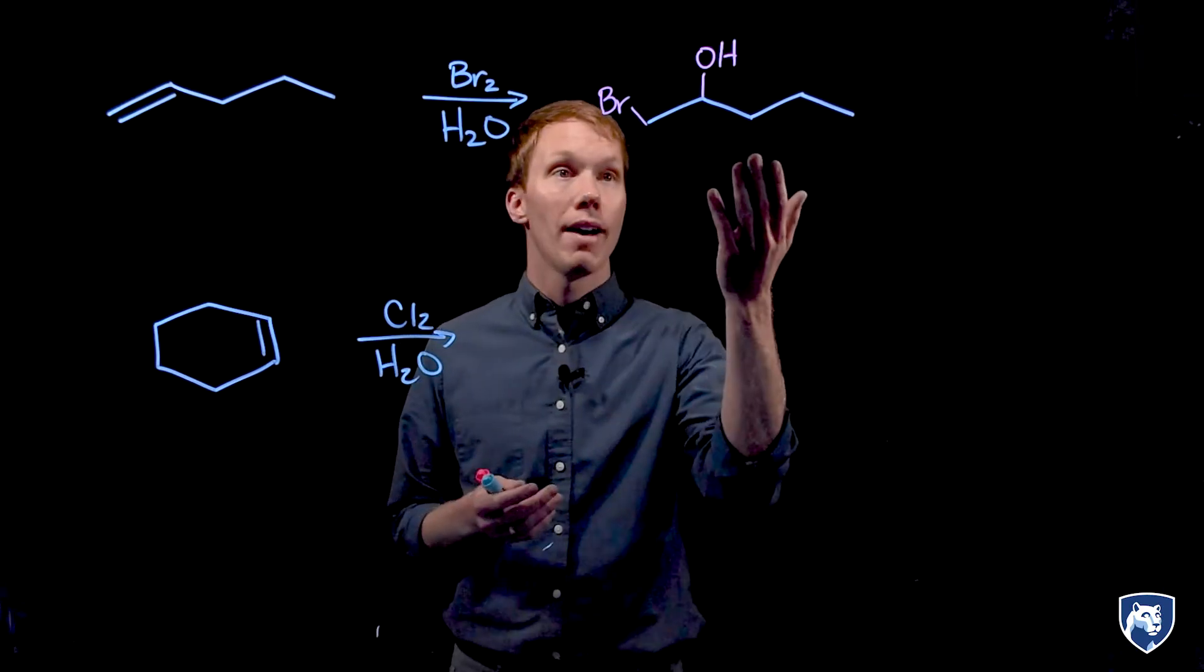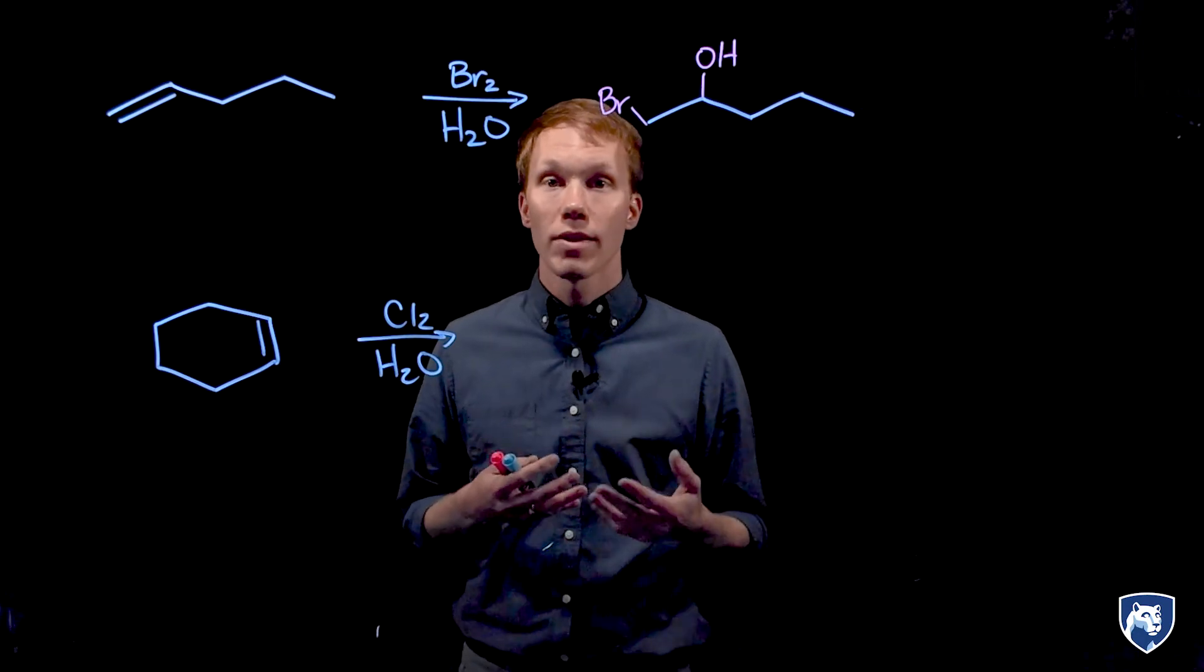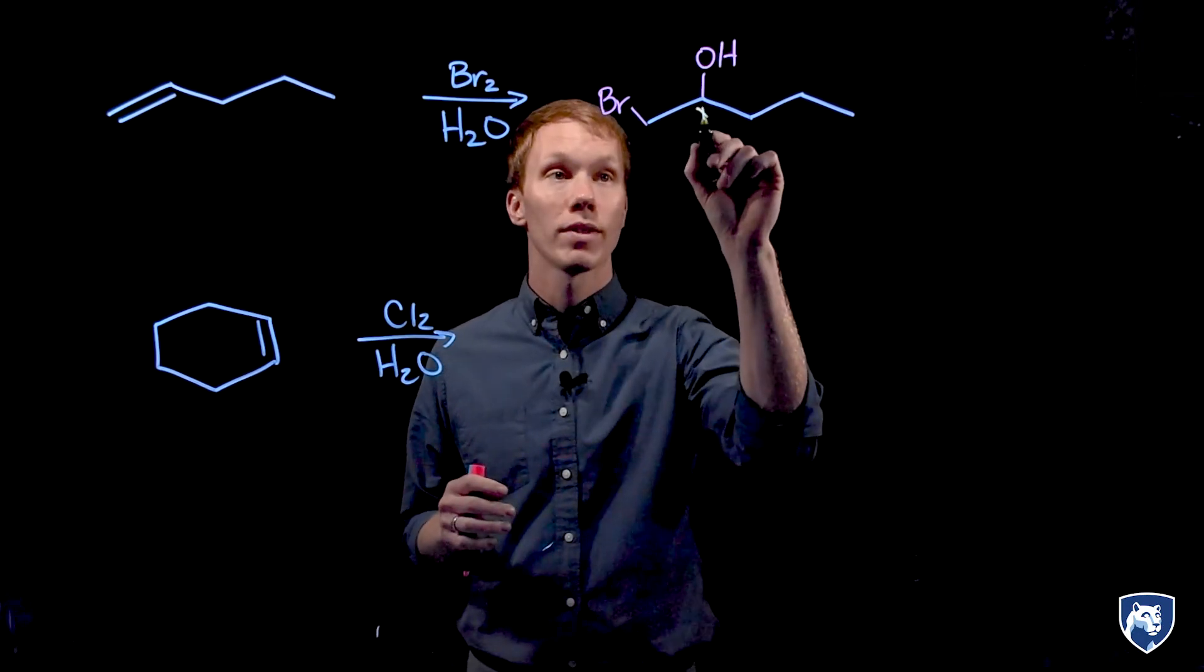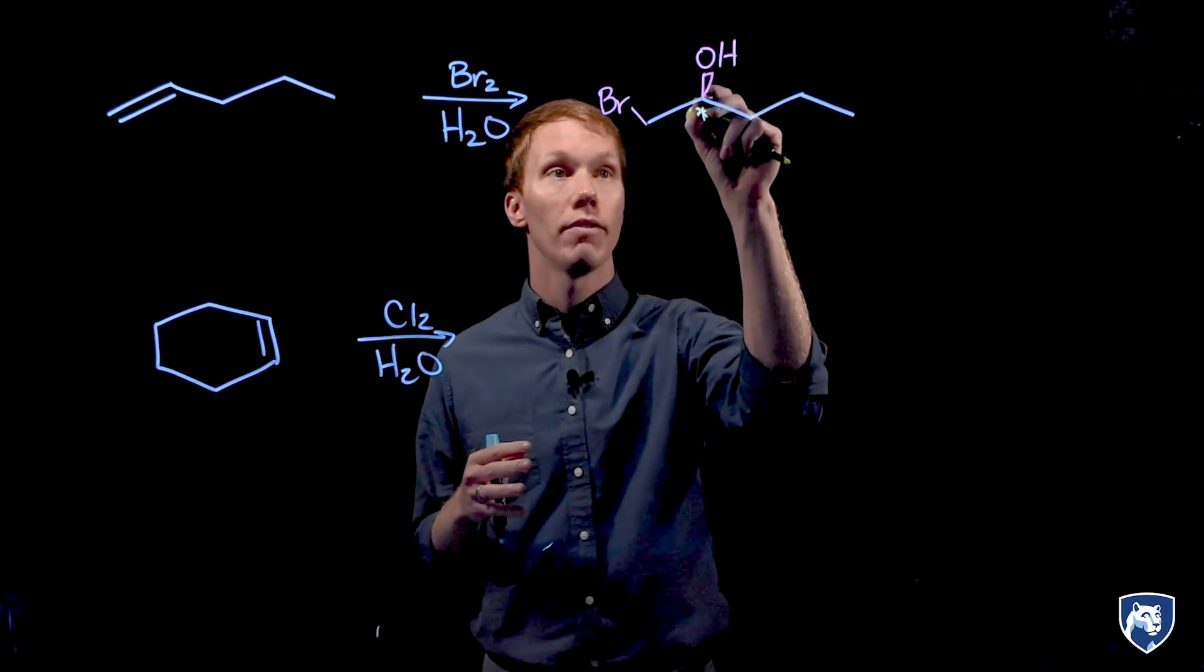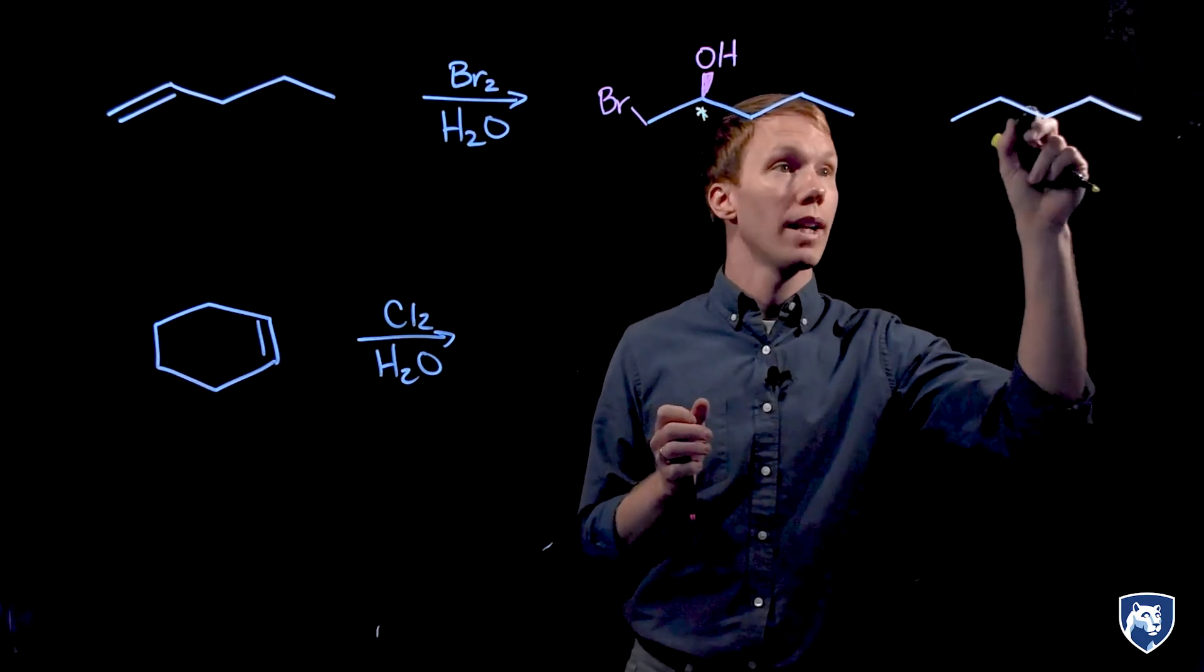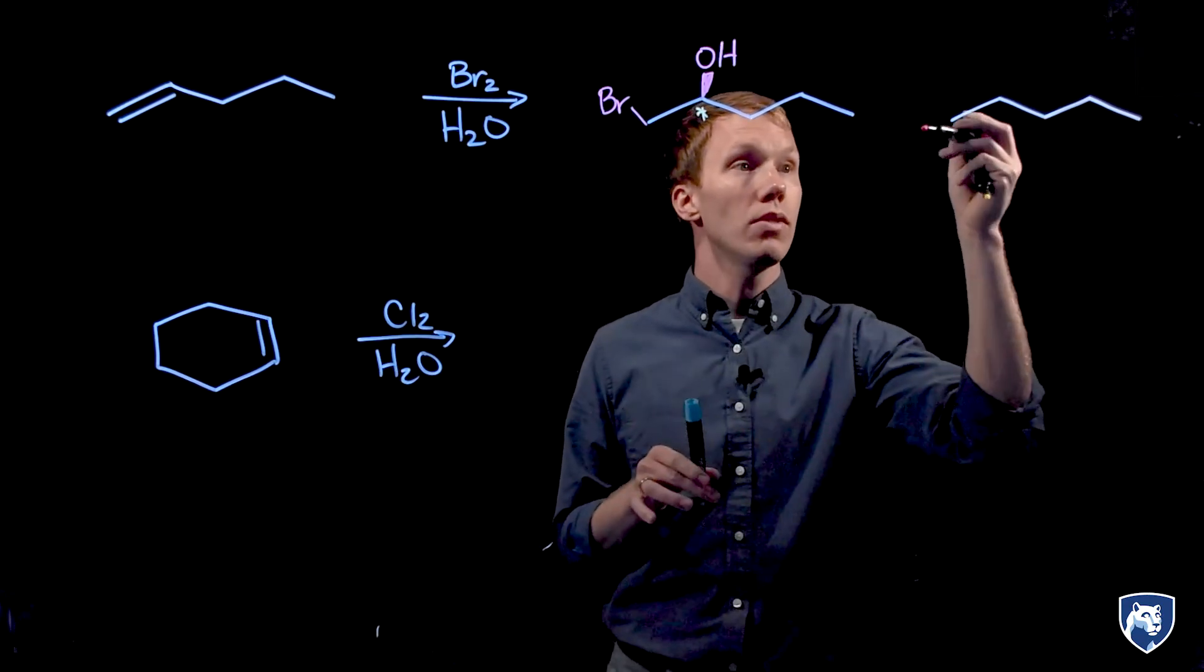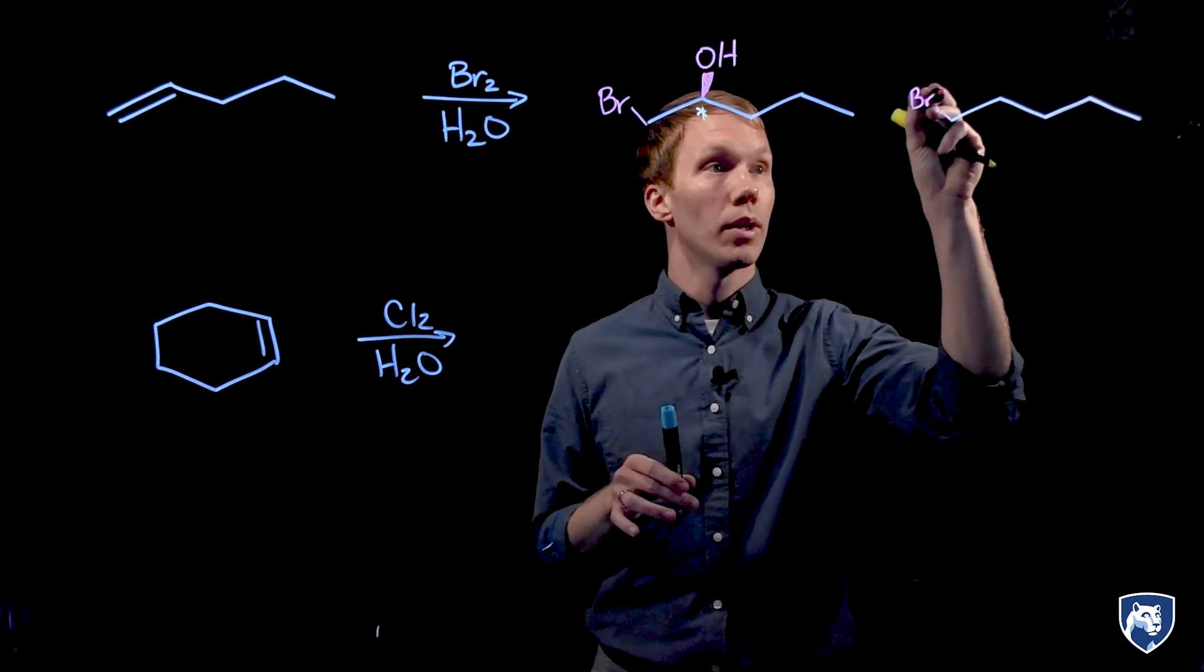In our first example I've drawn our major product. How many chiral centers have been generated here? This product has one chiral center so there are two possible stereoisomers of this compound. We can have the OH going forward or we can have the OH going backwards. These two compounds are enantiomers.